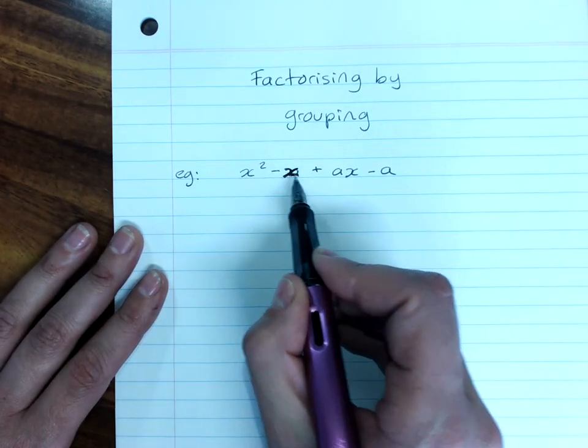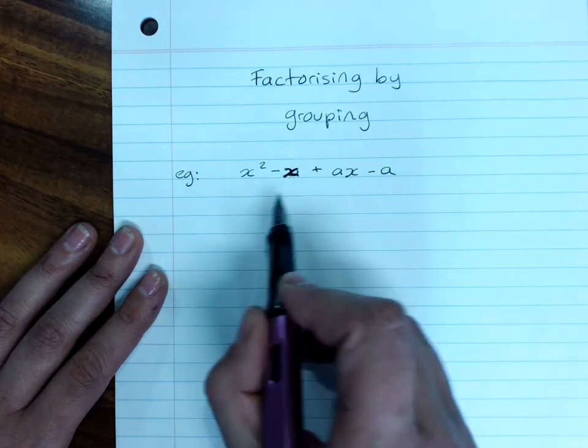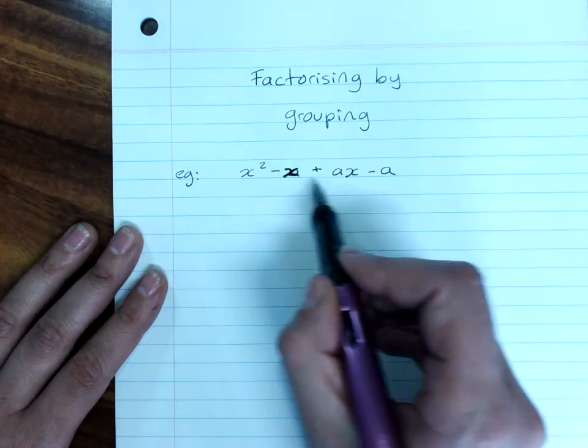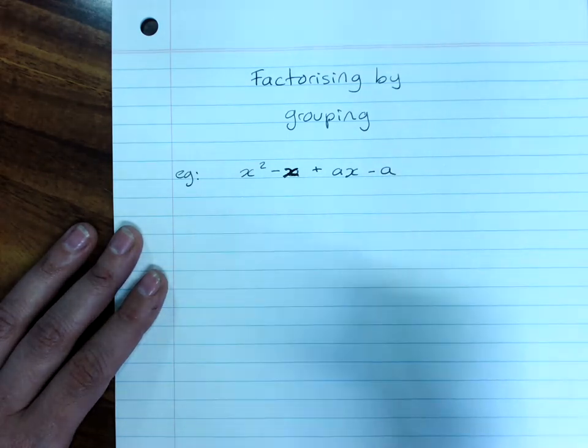I've got x squared minus x plus ax minus a. We check for a HCF or a common factor across all four terms. There isn't one.